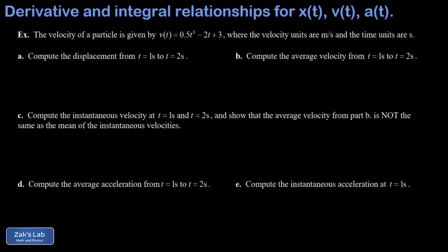Finally, we wrap things up with a thorough example covering these derivative and integral relationships. We're given a velocity function for a particle given by a cubic function. Note that the acceleration is definitely not constant — taking the derivative gives a quadratic function — so the constant-acceleration kinematic equations won't work here; we have to go back to first principles.